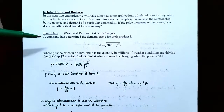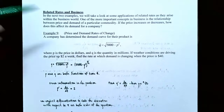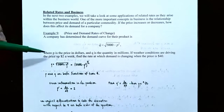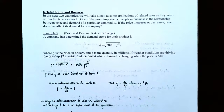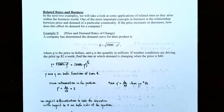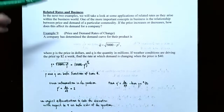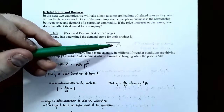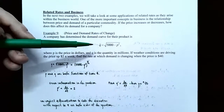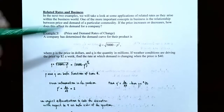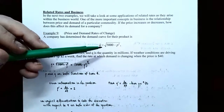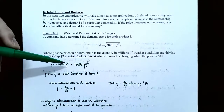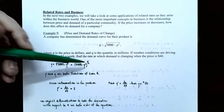A company has determined the demand curve for their product is given as Q equals the square root of the quantity 5,000 minus P squared, where P is the price in dollars and Q is the quantity in millions of their product. If weather conditions are driving the price up $2 a week, find the rate at which the demand is changing when the price is $40. We need to rewrite the radical function as a fractional power, so the square root of 5,000 minus P squared is really the quantity 5,000 minus P squared to the one-half power.